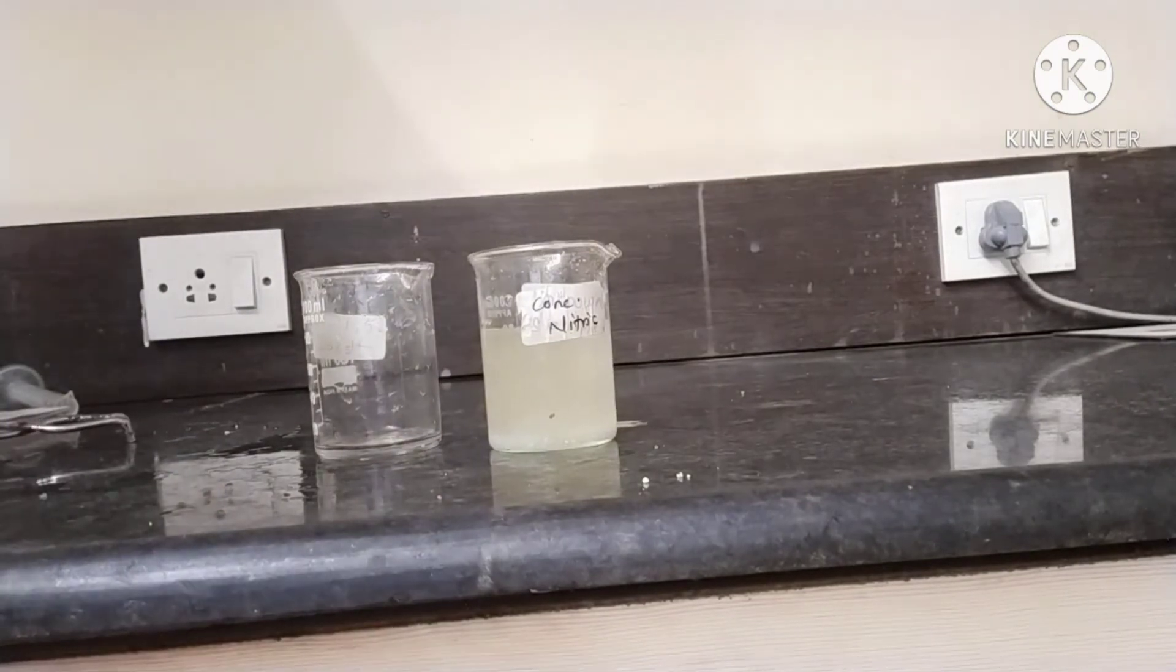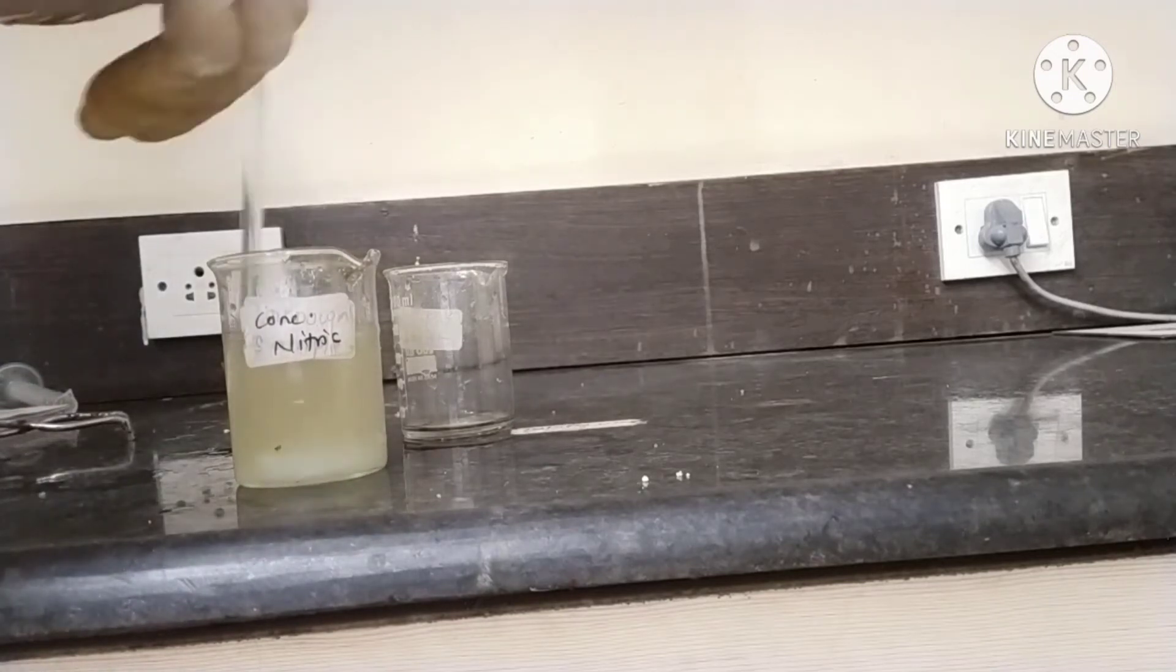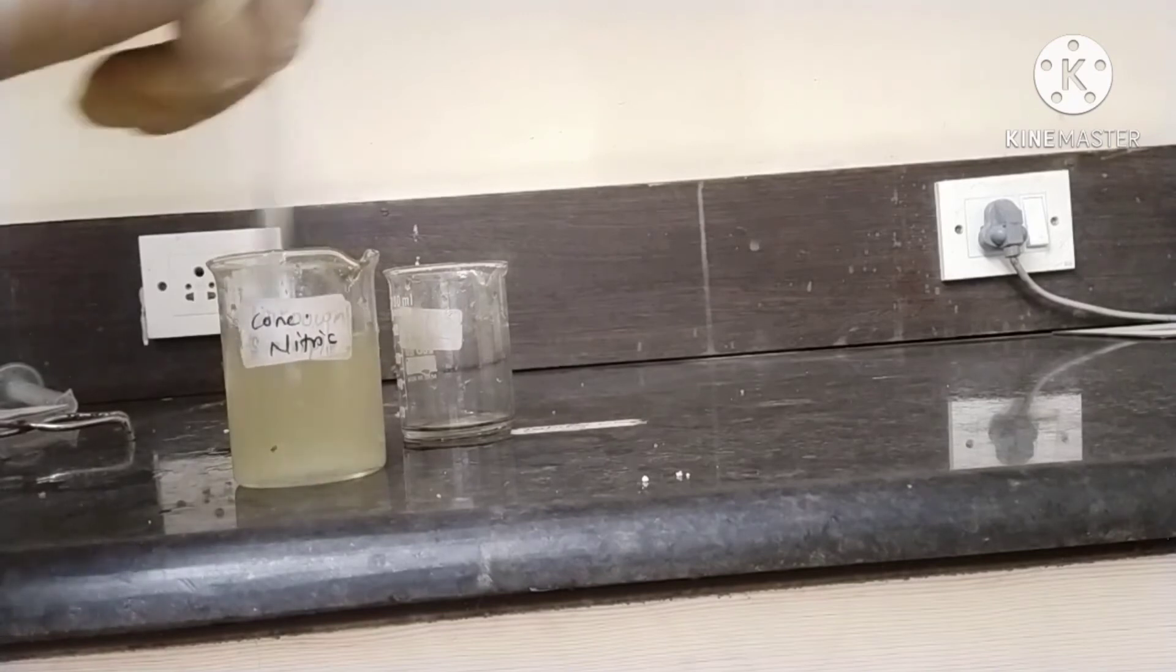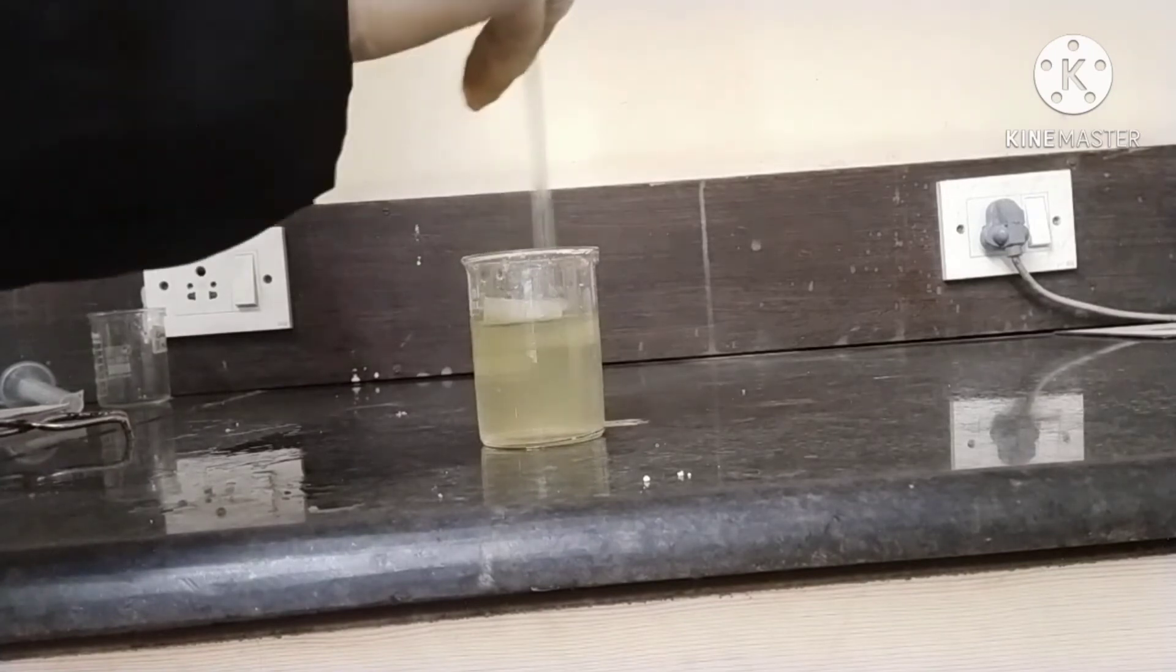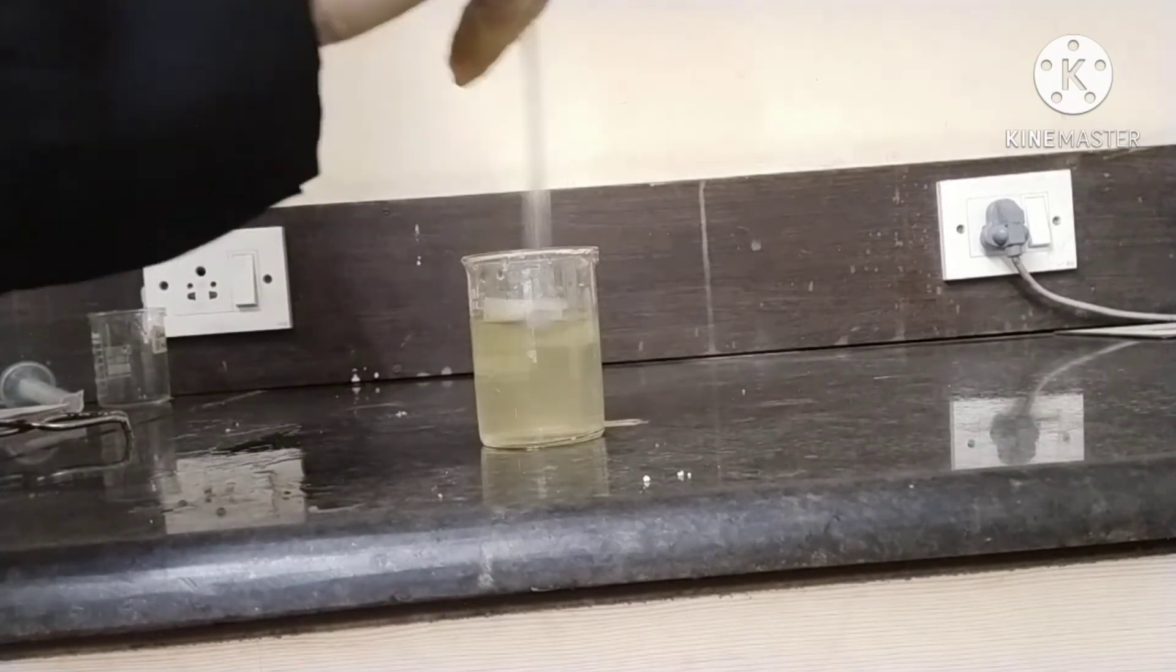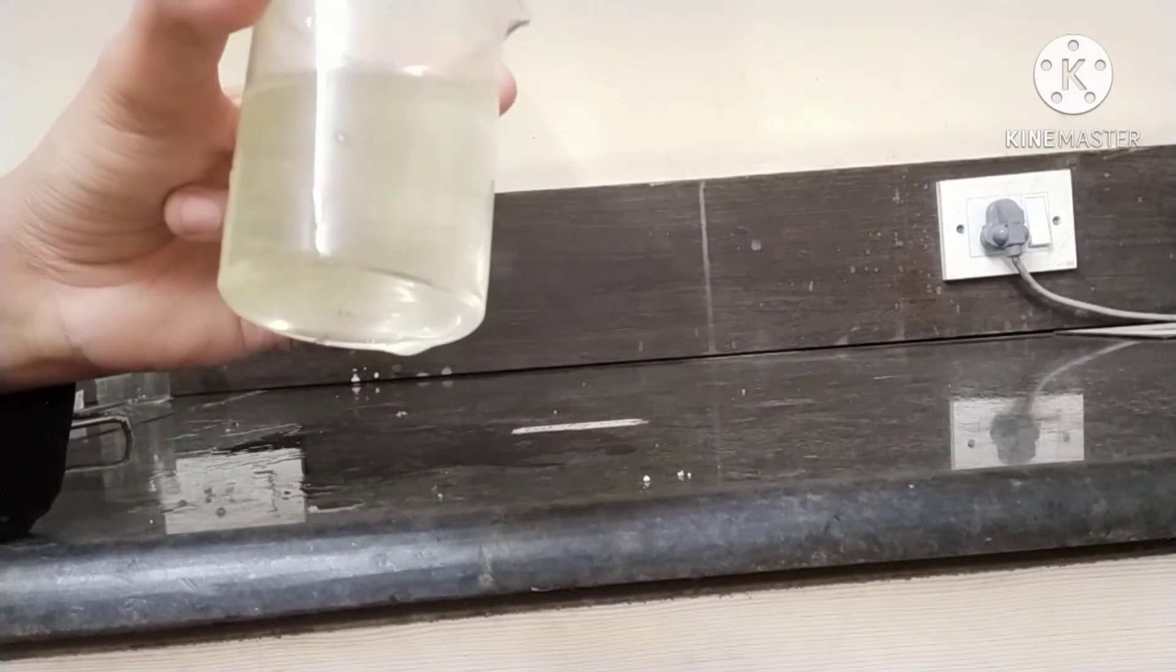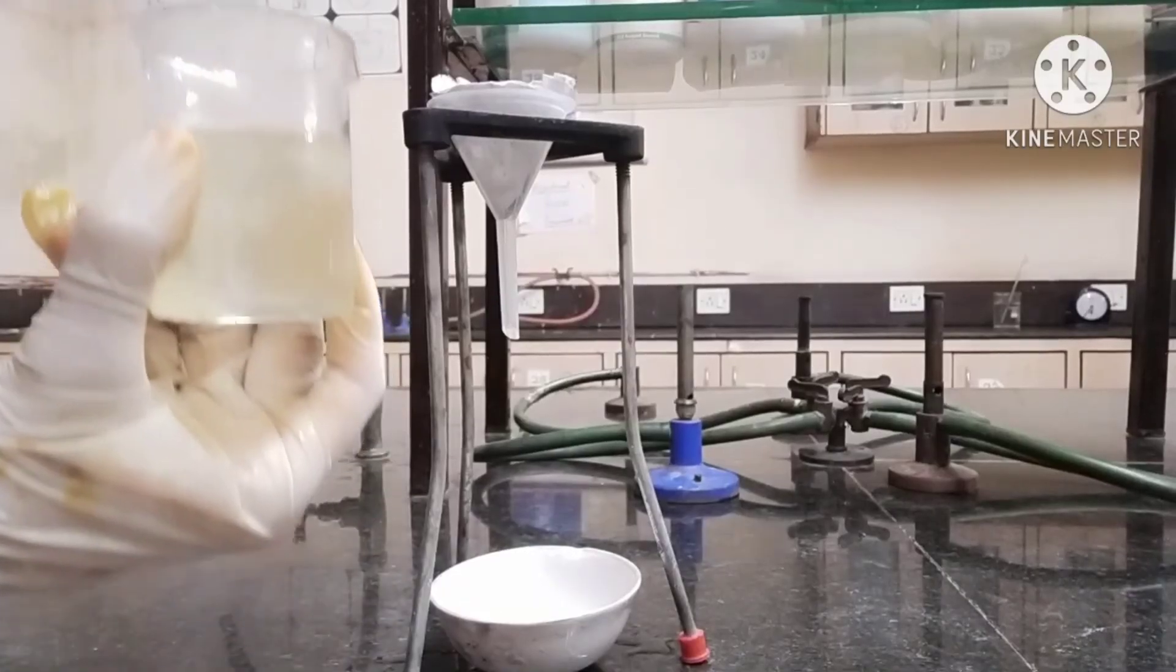Stir it. Stir the solution with the help of a glass rod. Stir it until the salts have completely dissolved. After adding boiled water, stir the solution constantly until the salts are completely dissolved. Now you can see clearly the salt particles are completely dissolved.